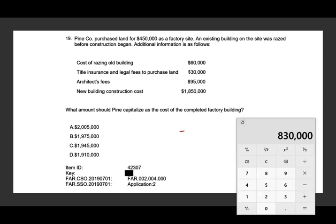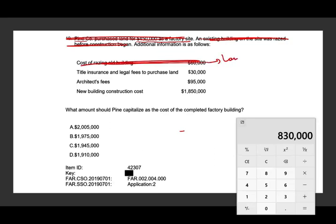What amount should Pine capitalize as the cost of the completed factory building? Pine Company purchased land for $450,000 as a factory site. Since they're asking about the building, the land cost is excluded. An existing building on the site was razed before construction began — that has nothing to do with the factory building. Cost of razing the old building is part of the land. Title insurance and legal fees to purchase the land — also land, not building. Architect fees: yes, that's included for the building. New building construction cost: also included. So $1,850,000 + $95,000 = $1,945,000.